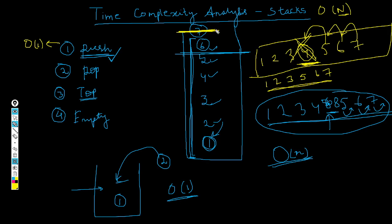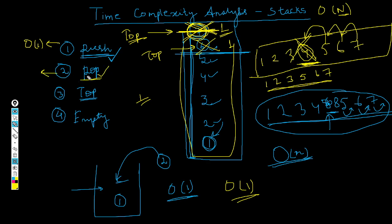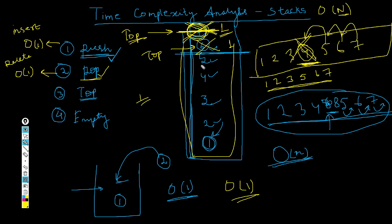But in a stack, we always perform operations using the top pointer. Whenever we remove an element, we always end up doing just one operation on the element at the top. For example, removing seven moves the top to six — that's a single operation. So removing any one element from the stack, even in the worst case, is O(1). The time complexity for the pop (delete) operation is O(1).